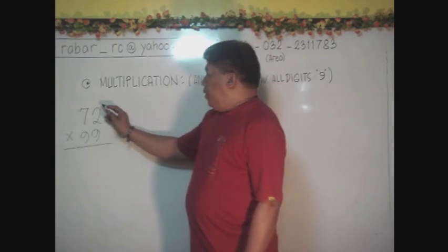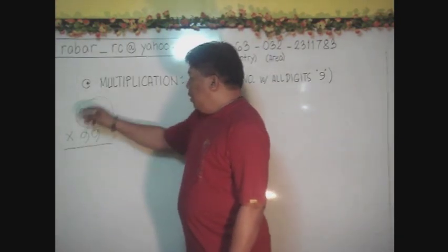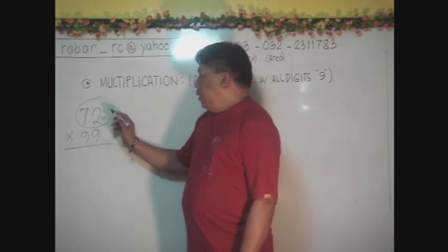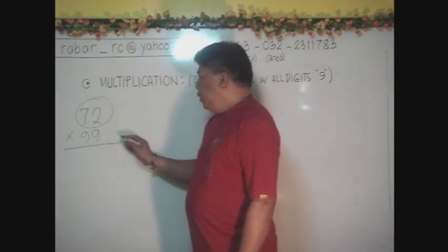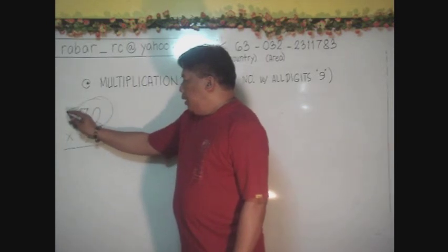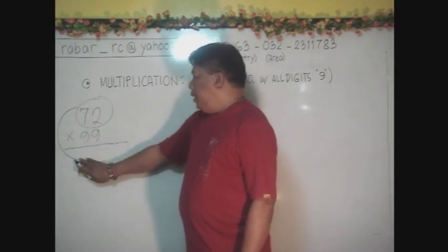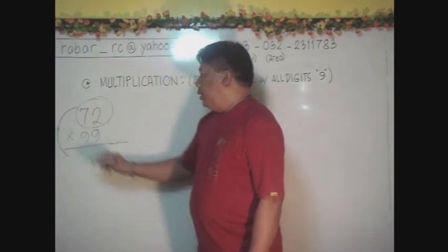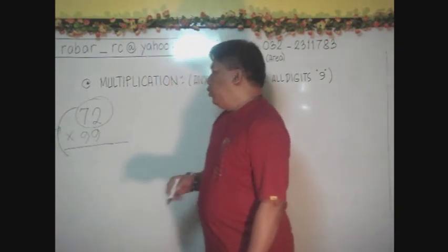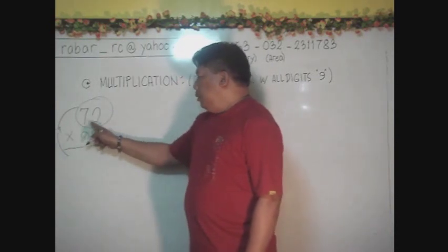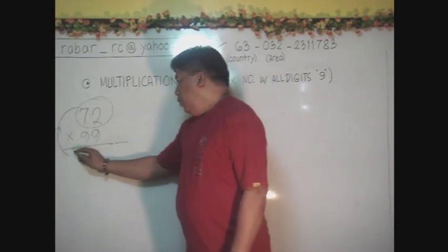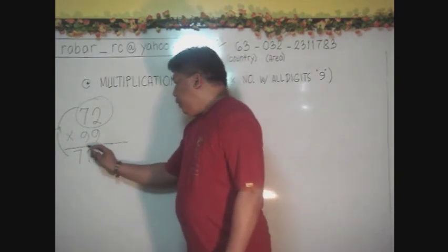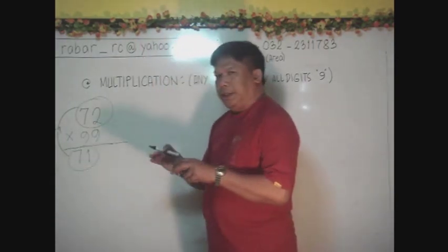We have our 72 multiplied by a number 99. The first thing to do is just rewrite this but subtract 1, or meaning minus 1. 72 minus 1 will give you 71. That will serve as our first step.